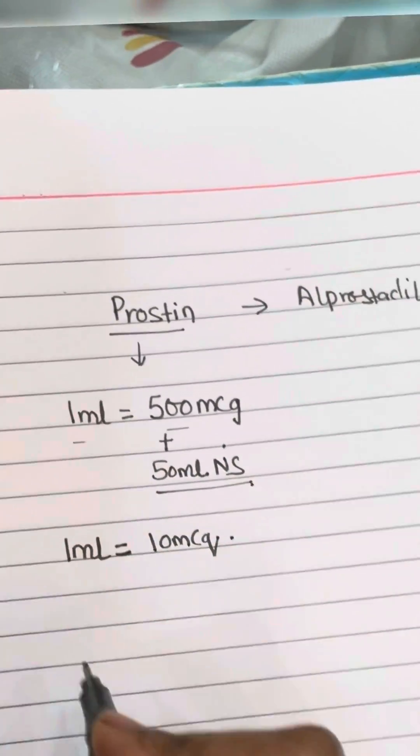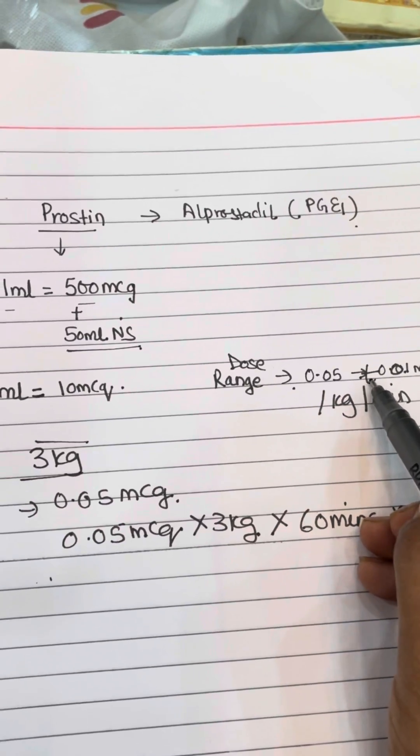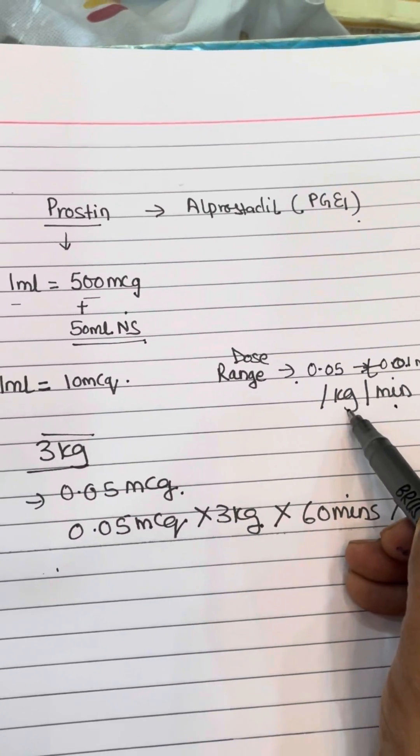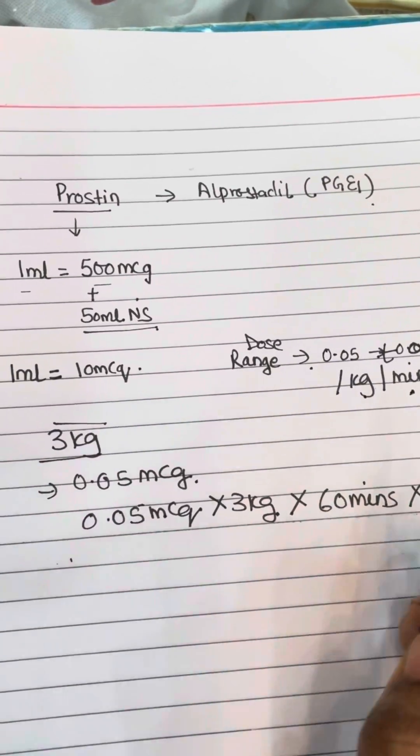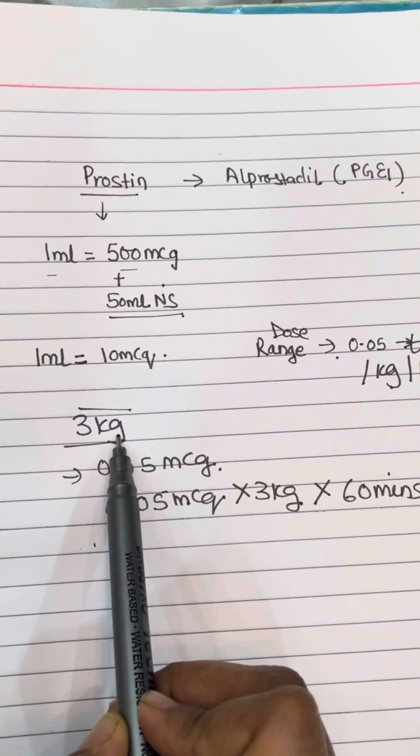The usual dose range is 0.05 to 0.1 microgram per kg per minute. Now let's understand with an example. Suppose you have a 3kg baby with...